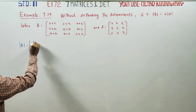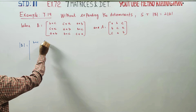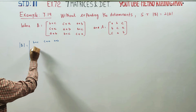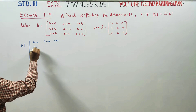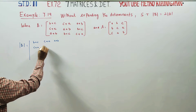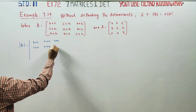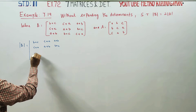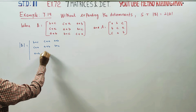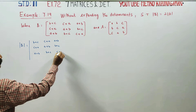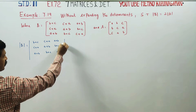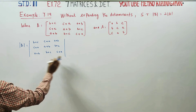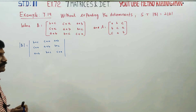The Determinant of B has elements: first row B+C, C+A, A+B; second row C+A, A+B, B+C; third row A+B, B+C, C+A. This is placed within straight-line brackets — it is a determinant.